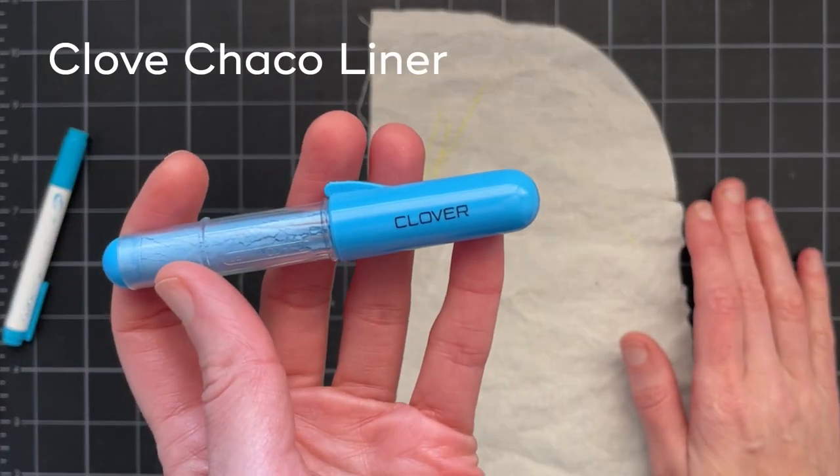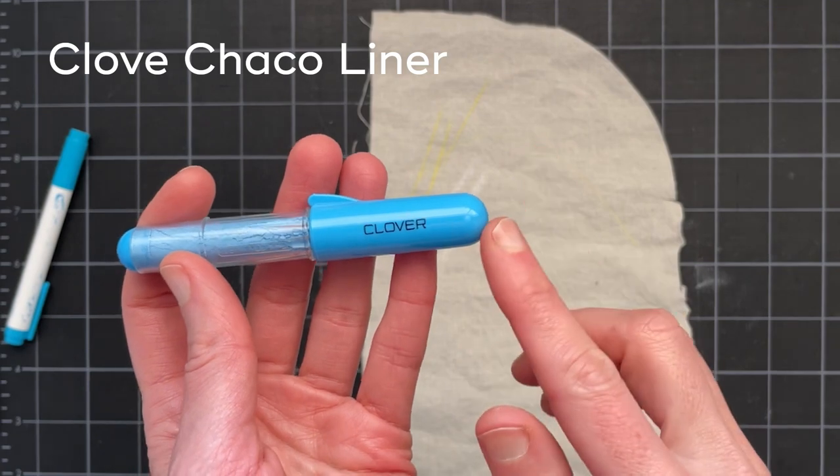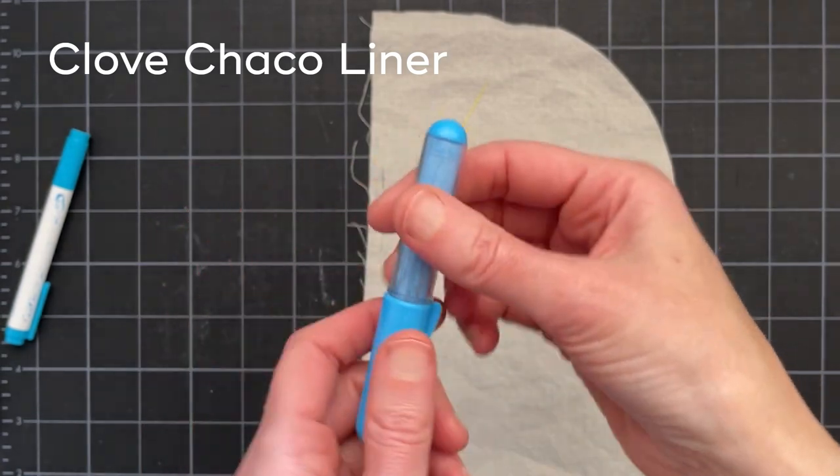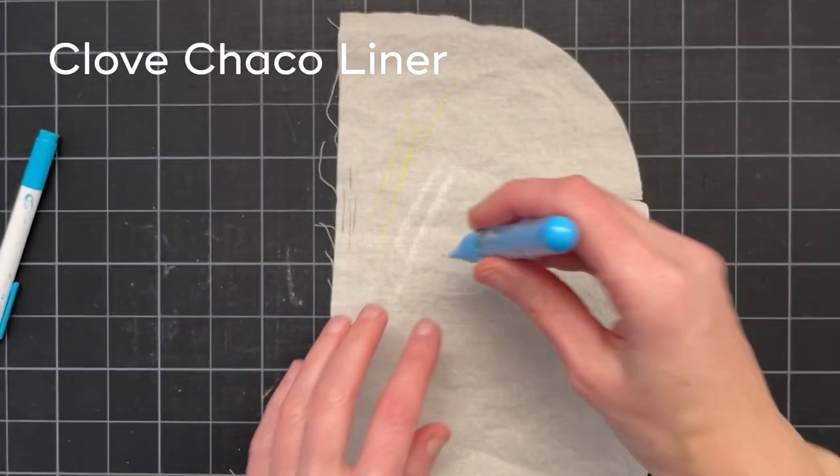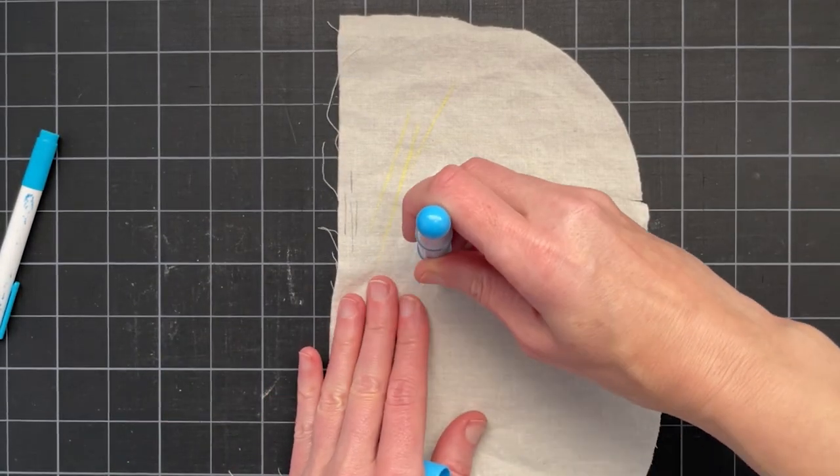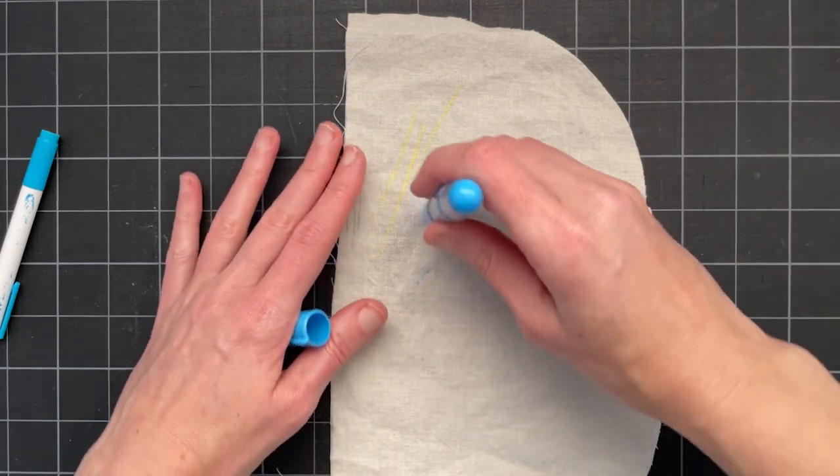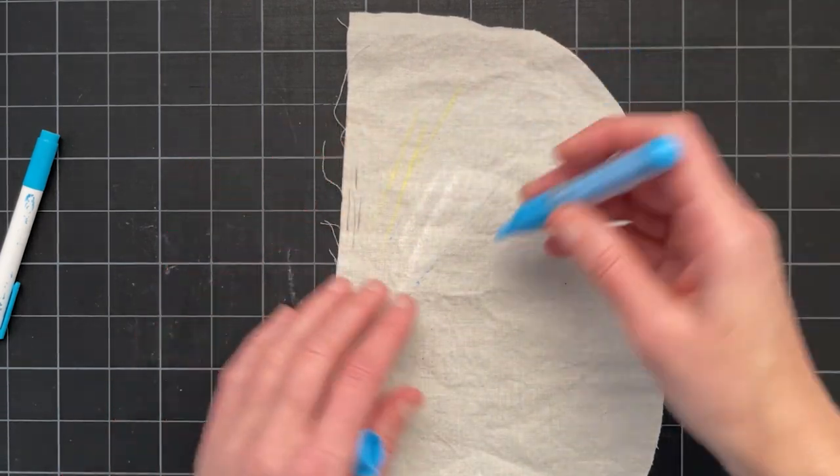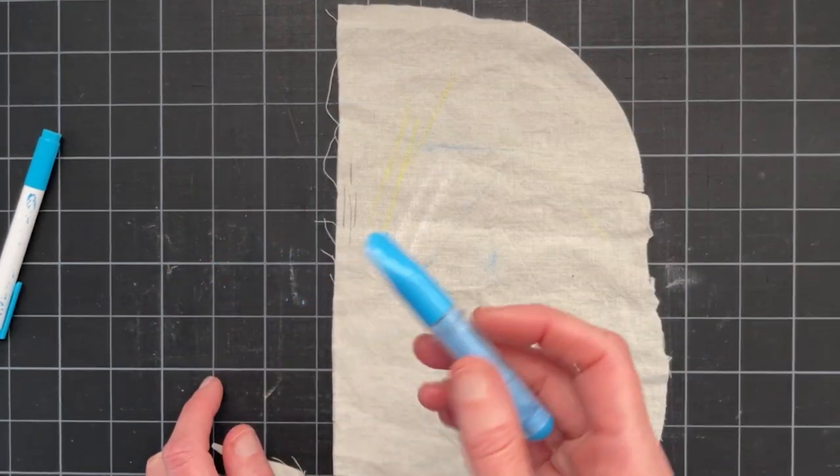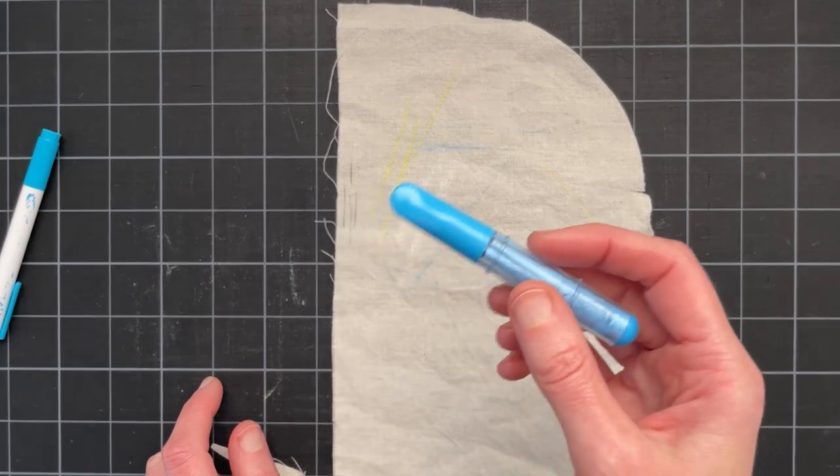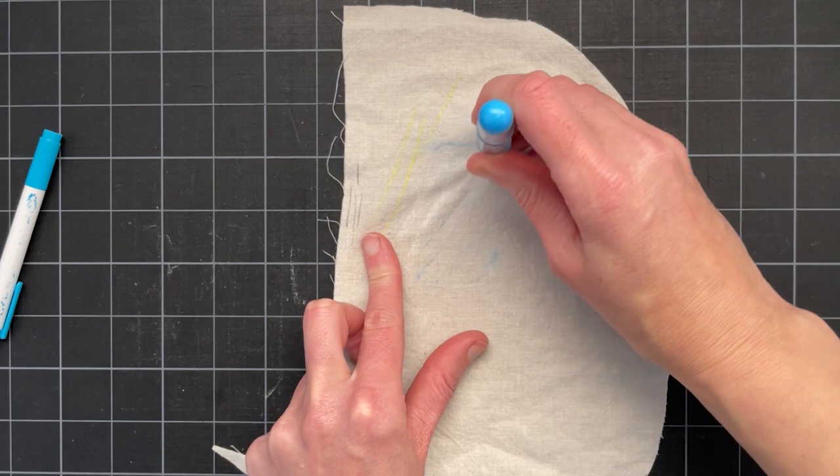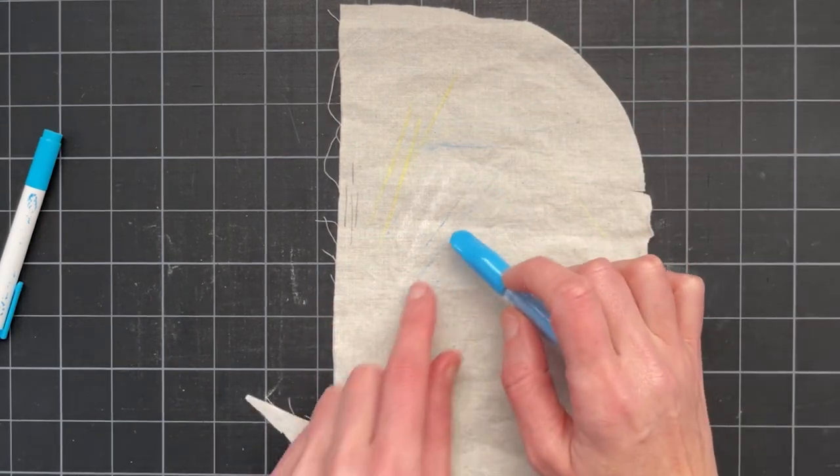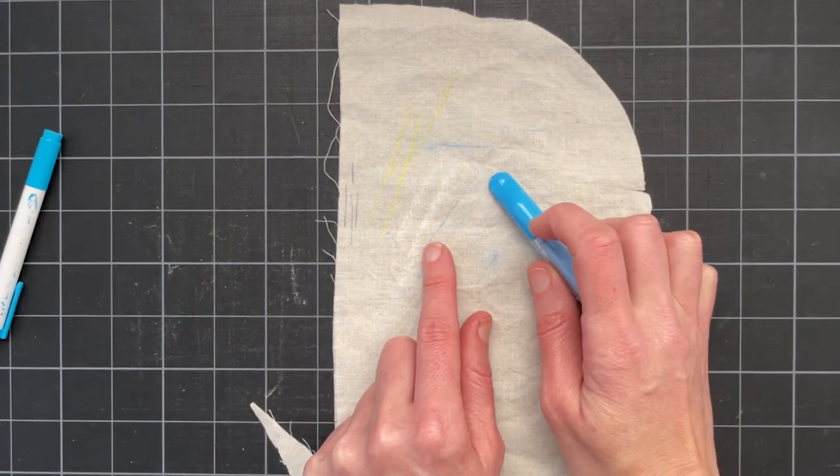Next this is kind of a fancier chalk tool. This is a Clover choco liner. This has a little piece of metal at the end so it's kind of like a tracing wheel and you can use it just to draw lines. This tool is really pretty new to me and I think you actually need to press a little bit harder than you think you would.